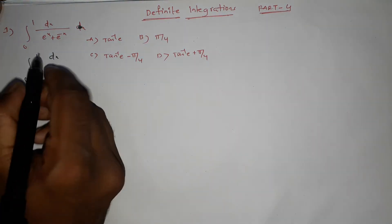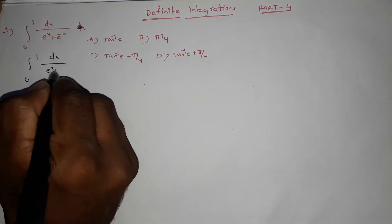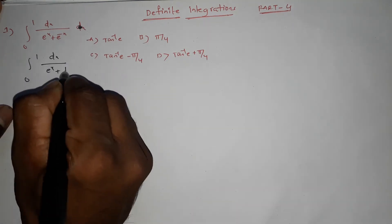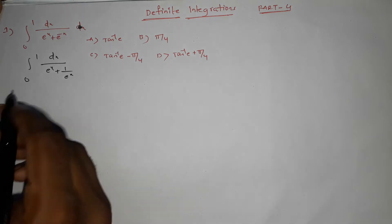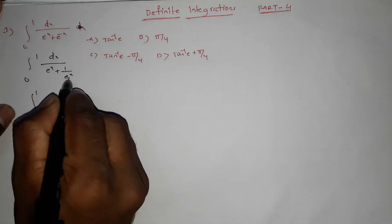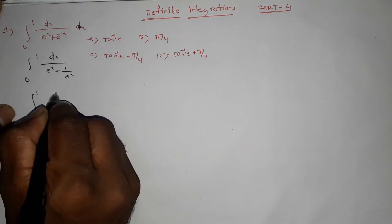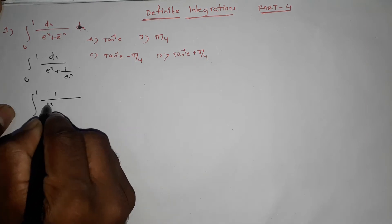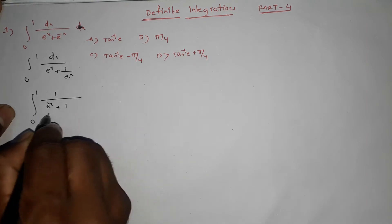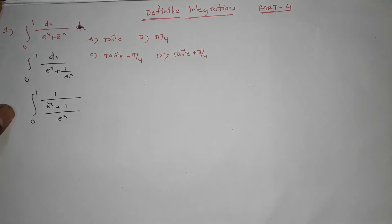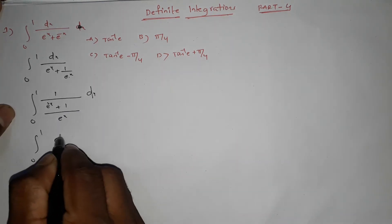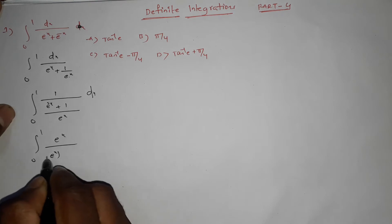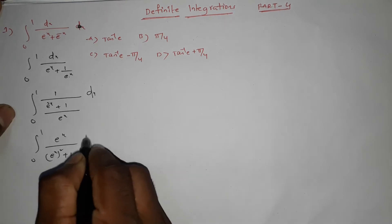Here we go. We write dx by e power x, then e power minus x as 1 by e power x. Let t equal to e power x. Multiply numerator and denominator: integration 0 to 1, e power x by (e power 2x plus 1) by e power x — that's right, apply it.